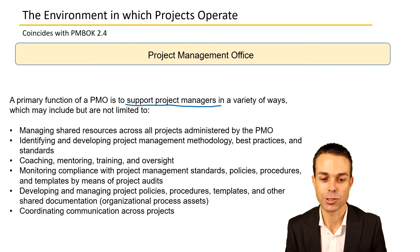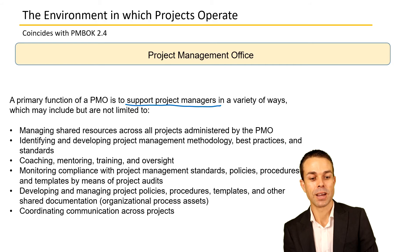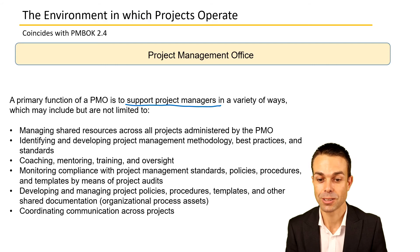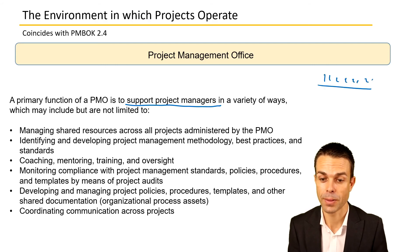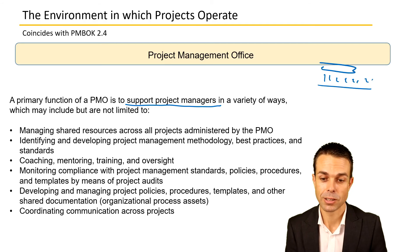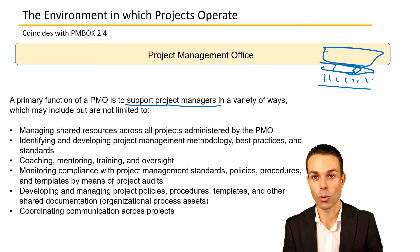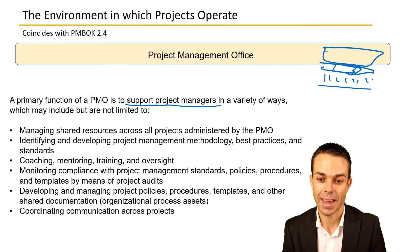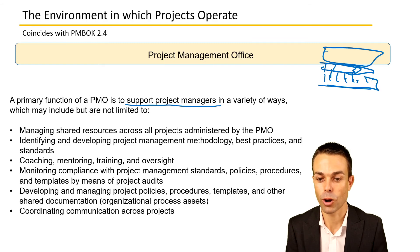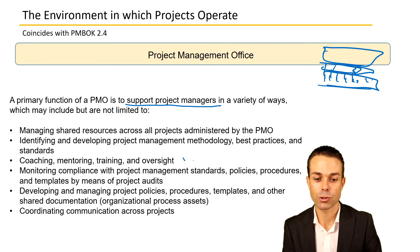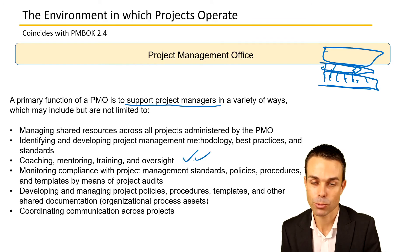When you have a PMO, the primary function — no matter what type it is — is to support project managers in a variety of ways. This includes managing shared resources across all projects. Maybe you've got 10 projects but only enough resources for six, so the PMO can keep an eye on all of this, usually from a program or portfolio view, and help manage the use of those resources across different projects.